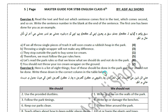I will read the text and find out which sentences come first in the text. The text is: a, b, c, d, e, f. Write the sentence number in the blank at the end of the sentence. The first one has been done for you as an example.